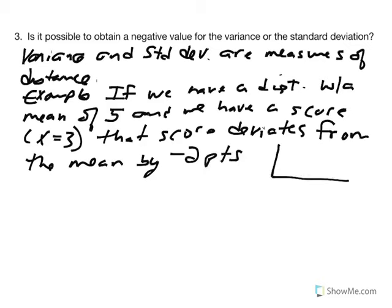If we visualize this: we have the mean of our distribution at 5, and a score of 3. We're talking about the distance from the score to the mean, which is negative 2 points. So our deviation value can be negative. But what we do with that deviation score to calculate variance is we square it — and any deviation score that is negative will then become positive.